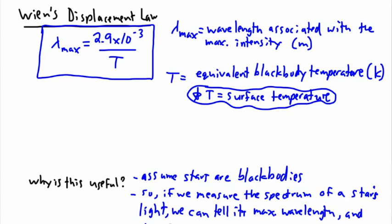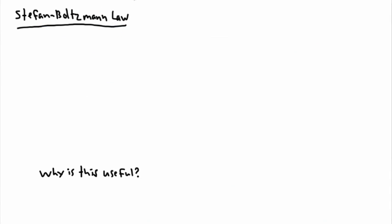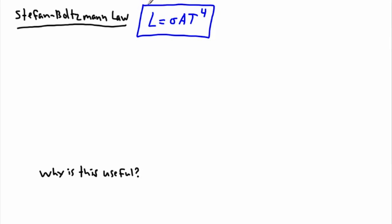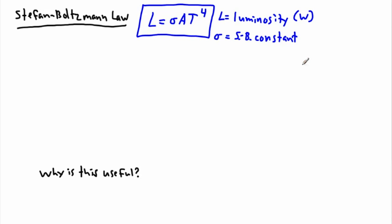Now we have another law called the Stefan-Boltzmann Law. It says L equals sigma A T to the power of 4. L is the luminosity of a star, measured in watts or joules per second. Sigma is the Stefan-Boltzmann constant — a Greek lowercase sigma. We know that sigma equals 5.67 times 10 to the negative 8, measured in watts per meter squared per Kelvin to the power of 4.